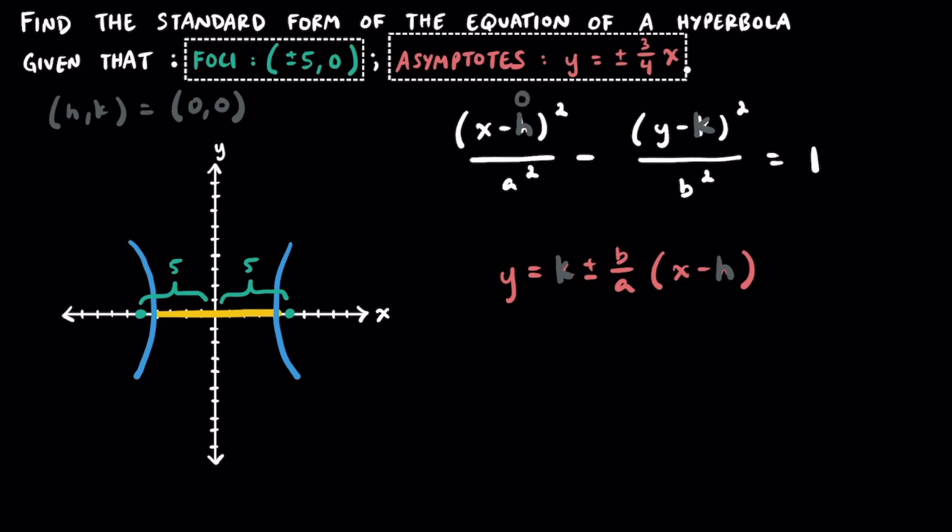Knowing that h and k are both zero, we can substitute in zero for h and k and simplify each of these formulas just a little bit. Simplifying the standard form for the hyperbola, we can write x squared over a squared minus y squared over b squared. And that's all equal to 1. Now as for the equation for the asymptotes, we can simplify that and say that y is equal to plus or minus b over a times x.